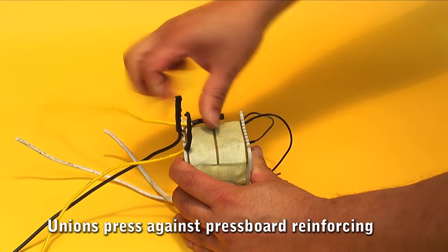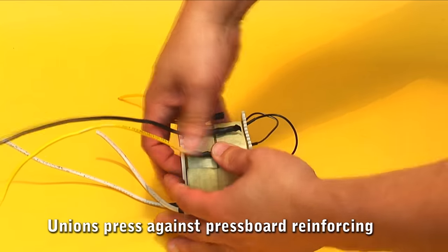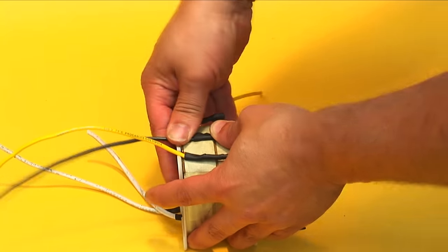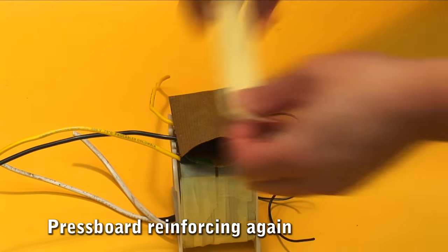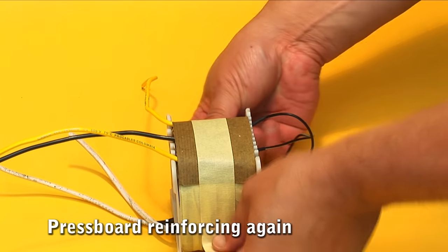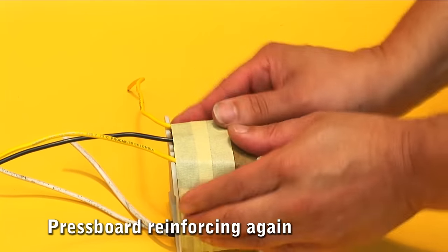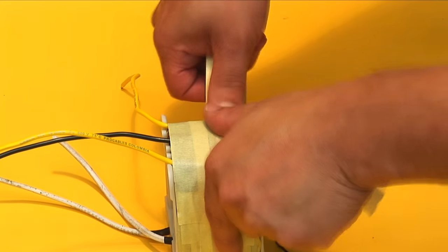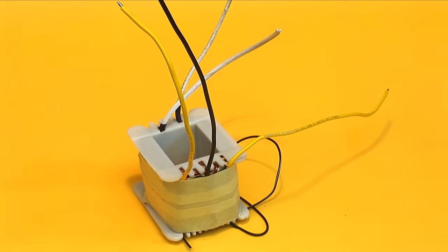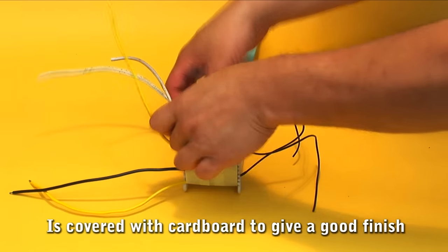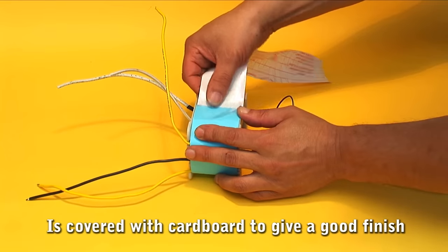We cover the junction with thermal shrinking spaghetti so that it fully covers the welds. We put a piece of waxed paper covering the joints and secure with masking tape.